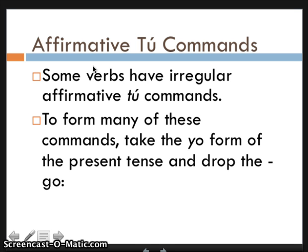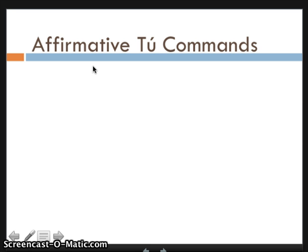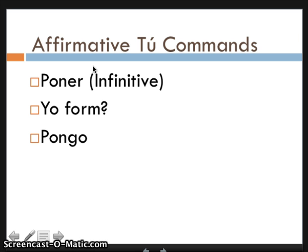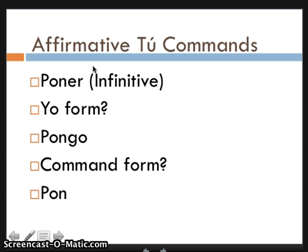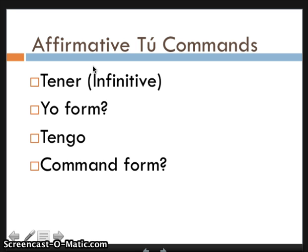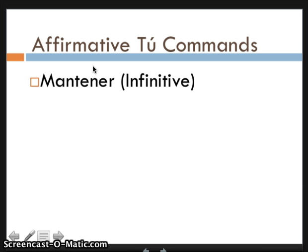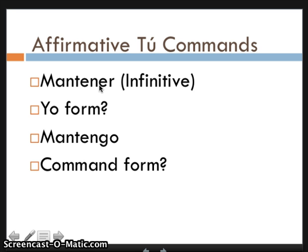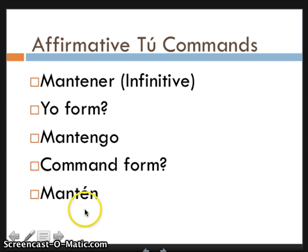You basically just take the yo form of the verb and drop the -go. For example, 'poner' in the yo form is 'pongo,' so when I drop the -go the command form becomes 'pon.' Another example: 'tener' in the yo form is 'tengo,' and when I drop the -go it becomes 'ten.' 'Mantener' — if a verb has a prefix, you just keep the prefix and add the rest. The yo form of mantener is 'mantengo,' and the command form would be 'mantén.' There's an accent over the e so that -tener is the star of the verb, pronounced 'mantén' not 'manten.'